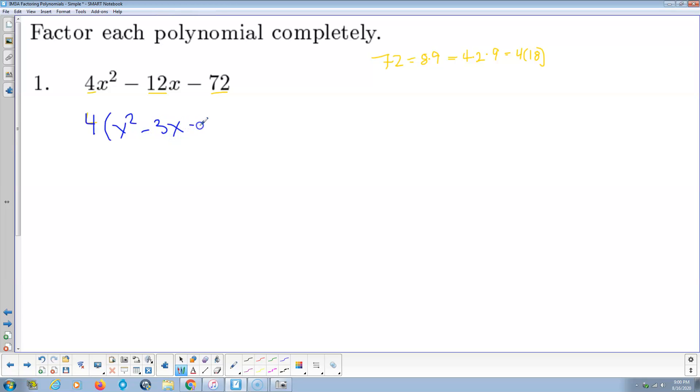Factor 4 out. That gets me x squared, negative 3x, and negative 18. I multiply back and check. 4 times negative 18 is negative 72. 4 times negative 3x is negative 12x. 4 times x squared is 4x squared. This is a quadratic, so I'm going to assume it factors to a pair of binomials. This is all stuff you learned in math two. This is a review, shouldn't be new.